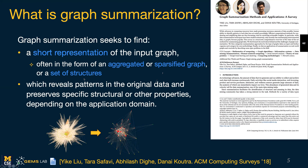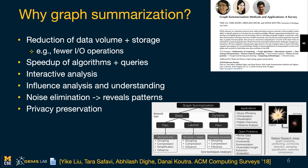Now, why do we care about summarization? By definition, it helps us reduce the amount of data and it reduces the storage requirements, which means that we have fewer input-output operations when we're applying algorithms on this data. As a result, summarization can speed up algorithms and can make it possible to apply existing algorithms, even if they're not very efficient, by applying them on this smaller data representation. It can also support interactive analysis and has been used for understanding influence analysis between communities.